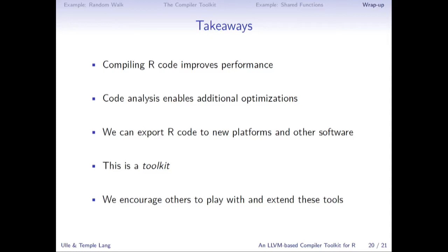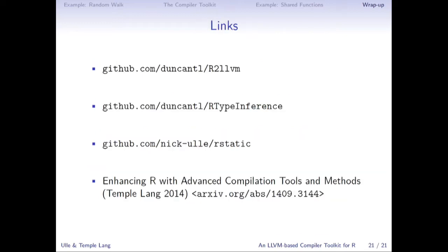To wrap up: compiling R code does improve performance, and you can use analysis of the code to get additional optimizations like I showed with the 2D random walk example. But the most important thing is that we can export R code to new platforms and other software — GPUs, other languages, other libraries. The tools I'm presenting are just a toolkit, not a complete compiler solution like some other things presented today. I encourage people to check it out and play with it if you're interested in compilers or building domain-specific languages. We'd love feedback on your use cases. The packages are not on CRAN yet as they're still under heavy development, and there's also a paper about this.